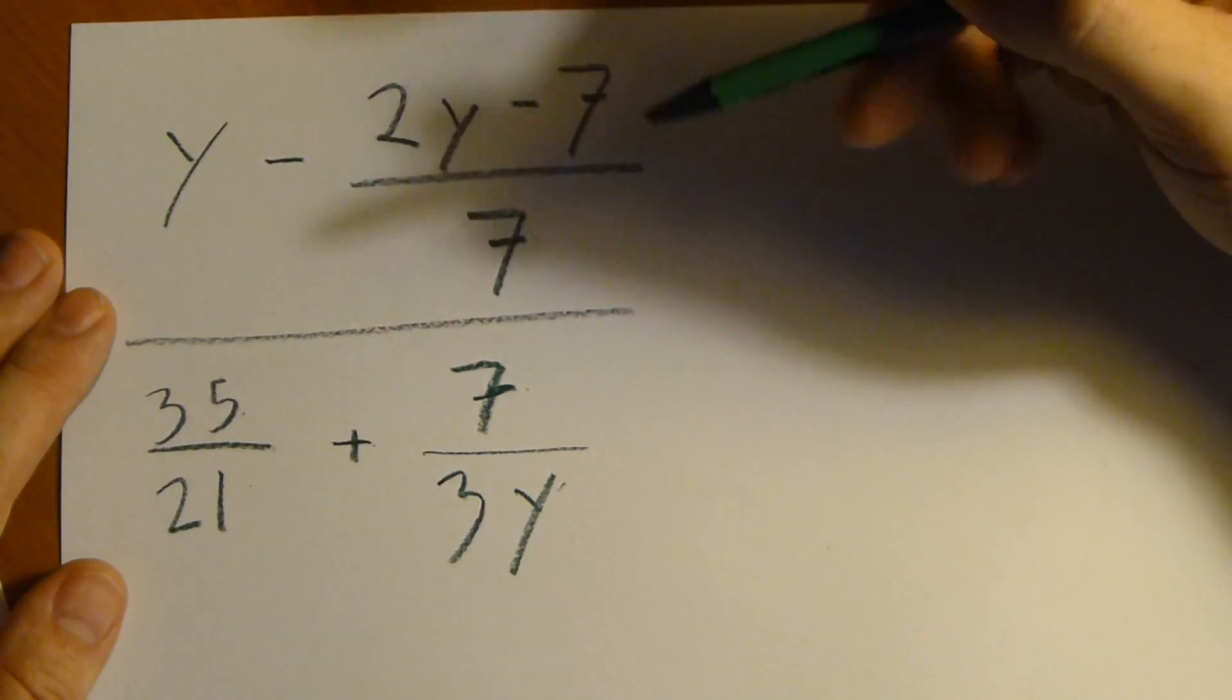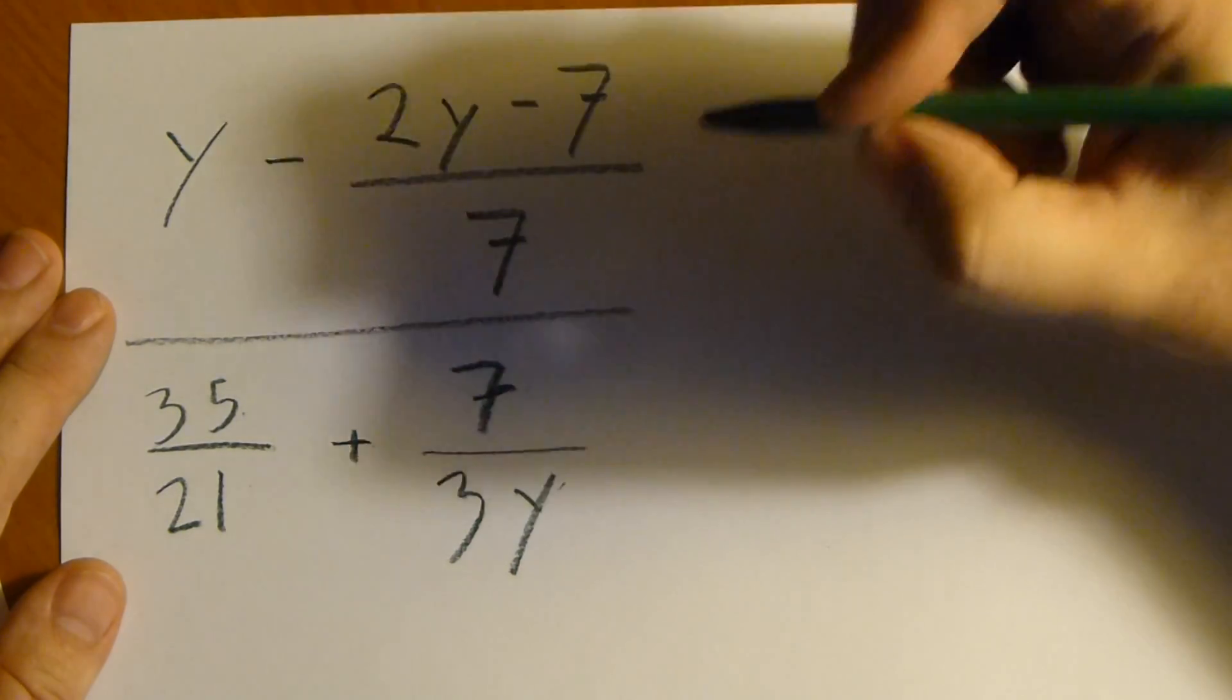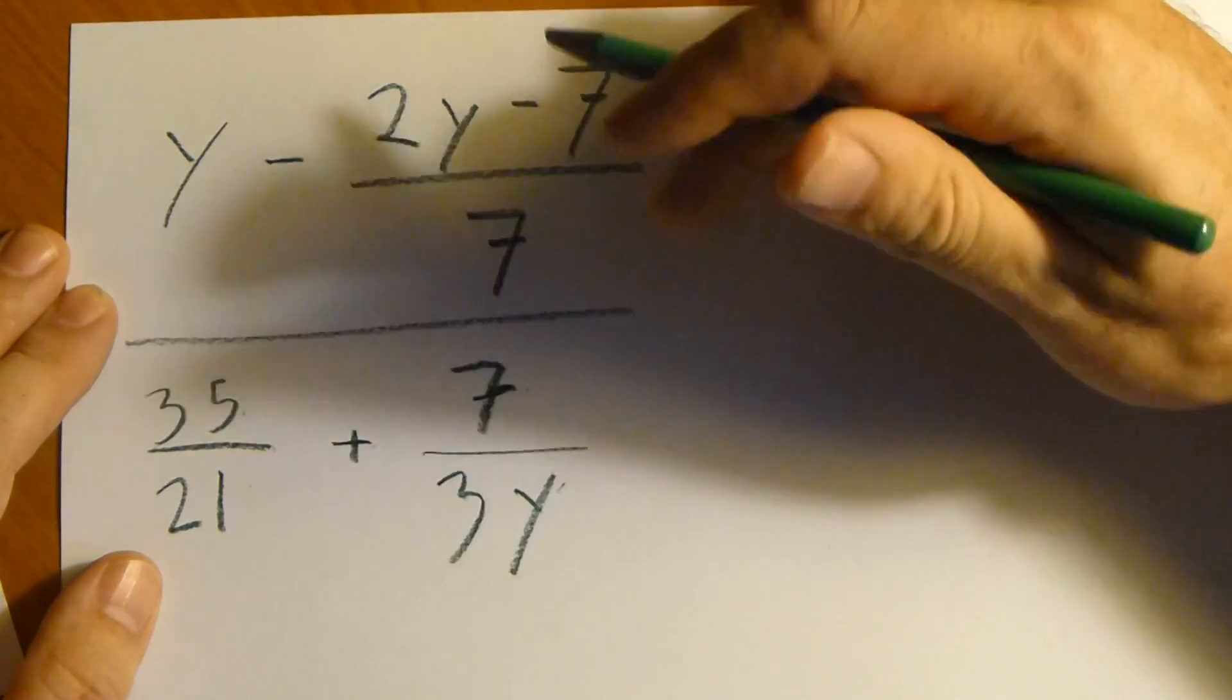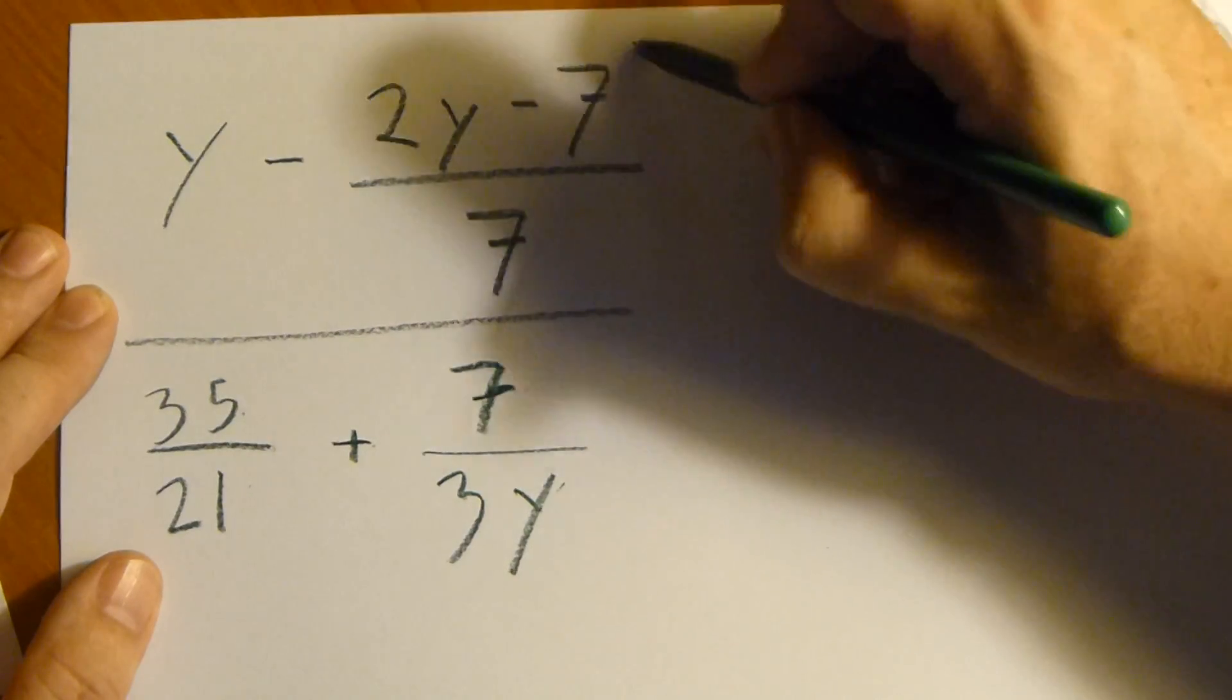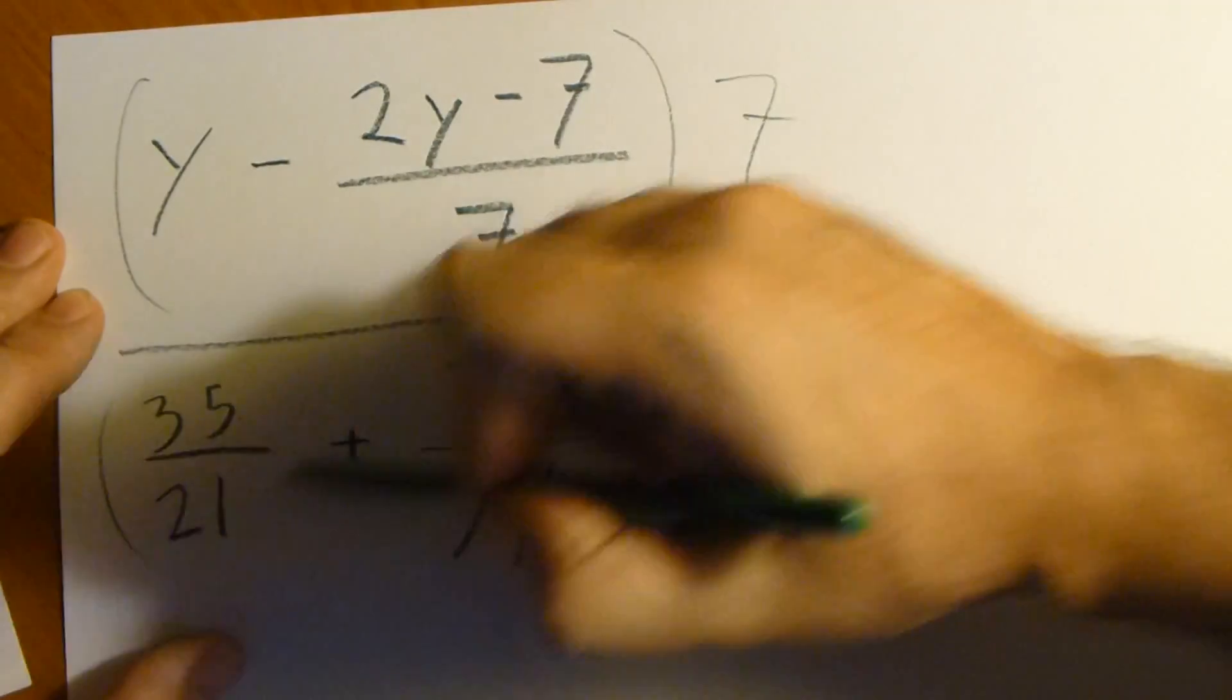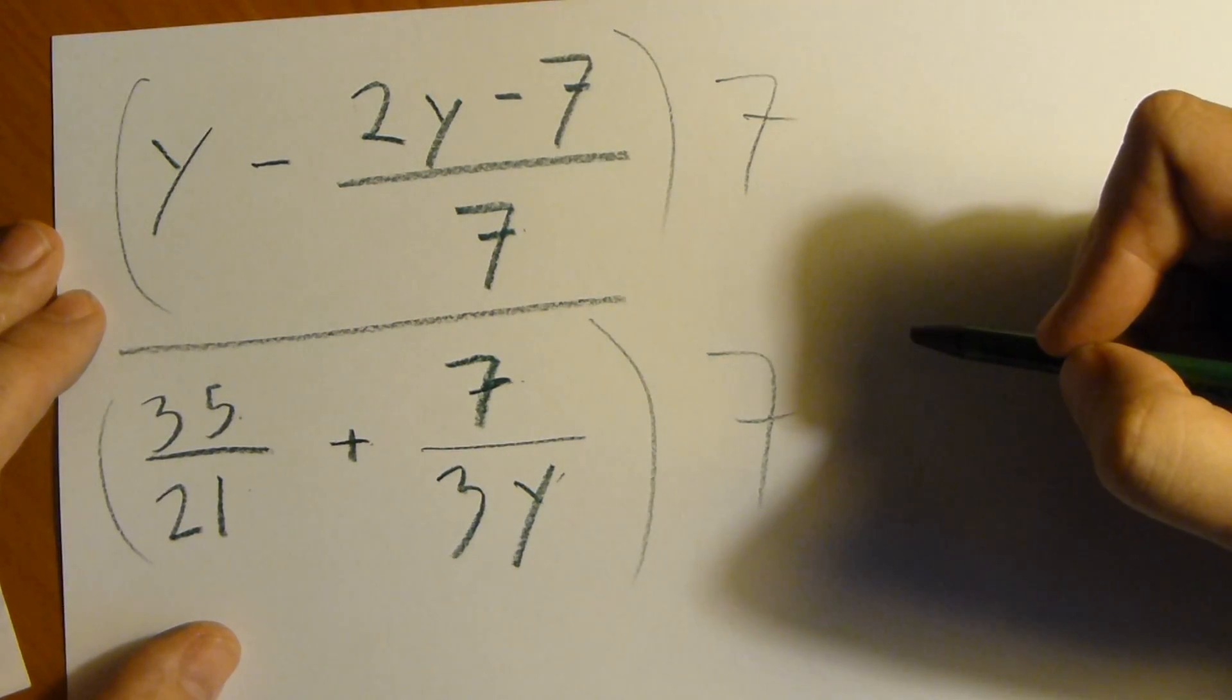So the trick with a complicated thing like this is do it a little bit at a time. First of all, the 7. This is kind of obnoxious to have a fraction in a fraction. Multiply the top fraction here, all of this, by 7 and all of this by 7. And that'll simplify things out.